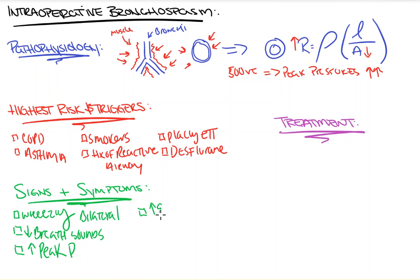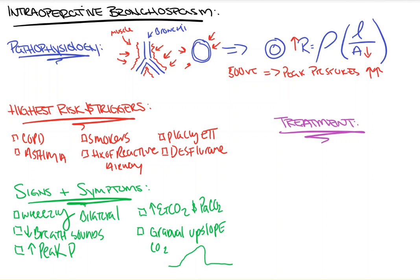We will see an increase in our end-tidal CO2 because this is an obstructive pathology — it's hard to get CO2 out, so eventually it will rise in our blood, also increasing our PaCO2, our arterial CO2. We're also going to see a gradual upslope of our CO2 end-tidal curve, because in this obstructive pattern you get less air out in the same amount of time, and the CO2 gradually leaks out rather than all reaching its peak concentration at the same time.